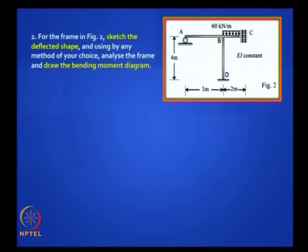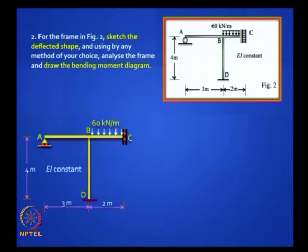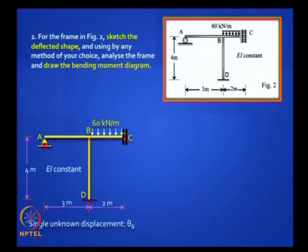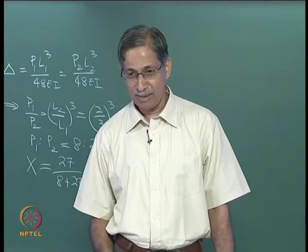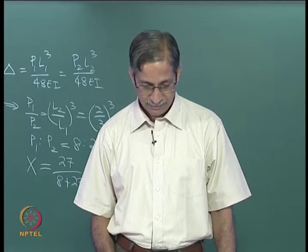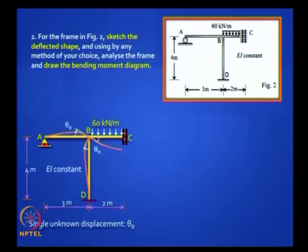The second problem: I asked you to draw the deflected shape, but many of you lifted up the beam from A — there is a roller support there, so it cannot fly up. There is only one unknown rotation in this problem. You should do it by the displacement method — force method is not appropriate here. The only unknown is theta_B. Will theta_B be clockwise or anticlockwise? It is going to be clockwise. Do that first, then it should be easy to draw the deflected shape. Even before starting the detailed analysis, drawing the deflected shape gets you marks.